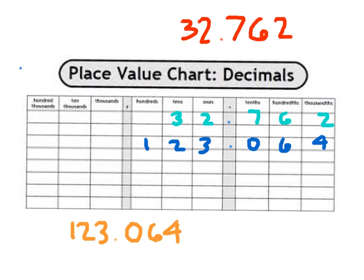And the way that we read that is we read this whole portion first — 123, and. And then we say 64 thousandths.